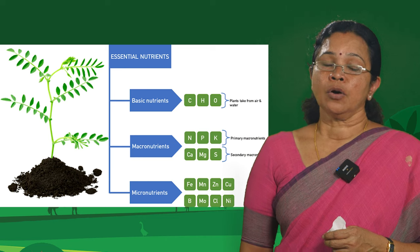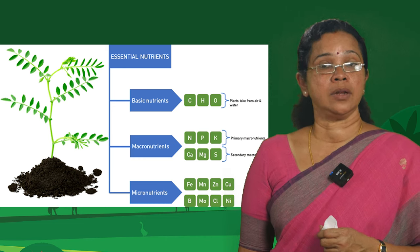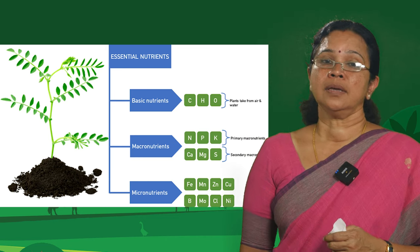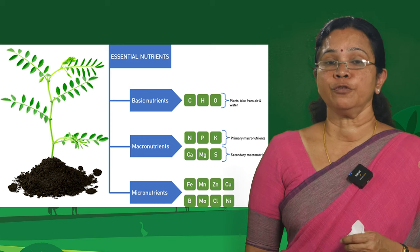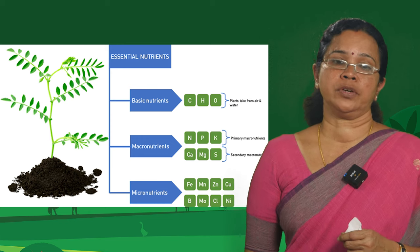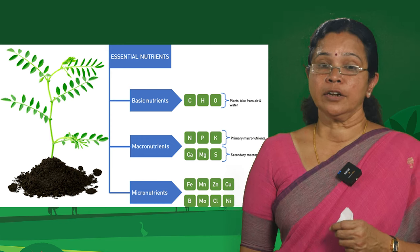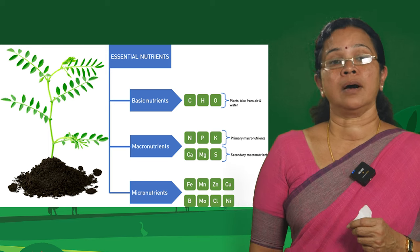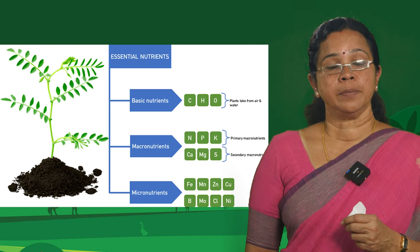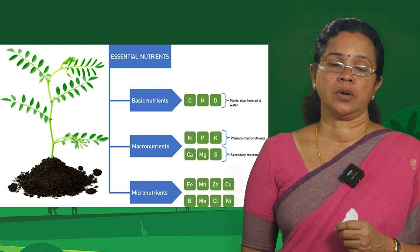Of these, three nutrients — carbon, hydrogen and oxygen — are received from the atmosphere, whereas the remaining 14 are sourced primarily from the soil.